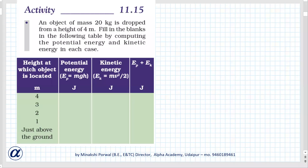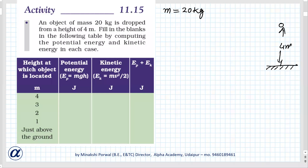Activity 11.15: an object of mass 20 kg is dropped from a height of 4 meters. So there is an object at height 4 meters from the ground, and it is dropped from this height. Fill in the blanks in the following table by computing the potential energy and kinetic energy in each case. We are going to take g as 10 so that our calculations will be simplified.